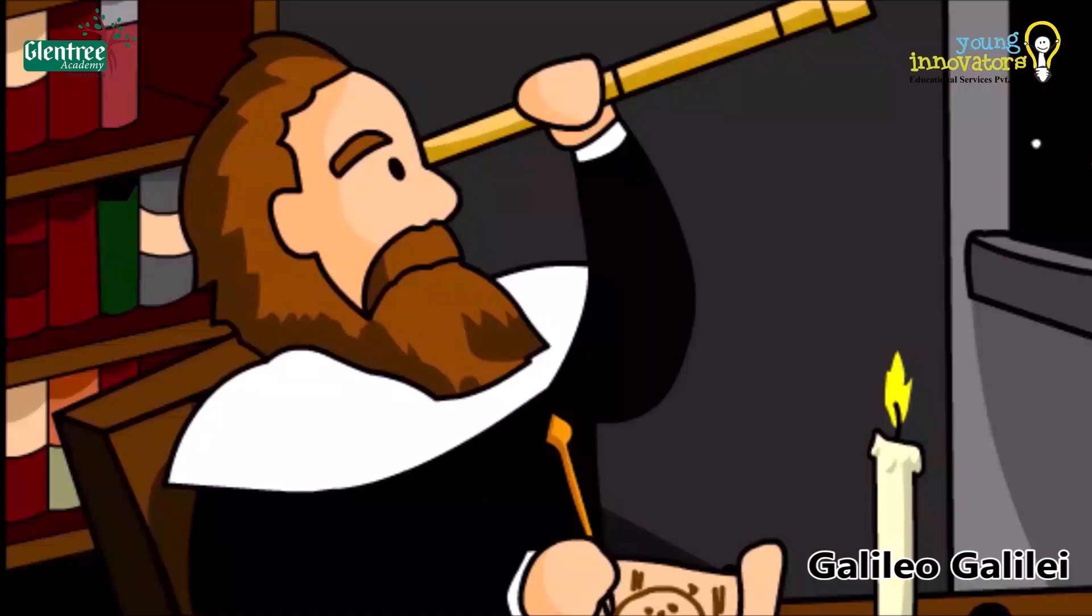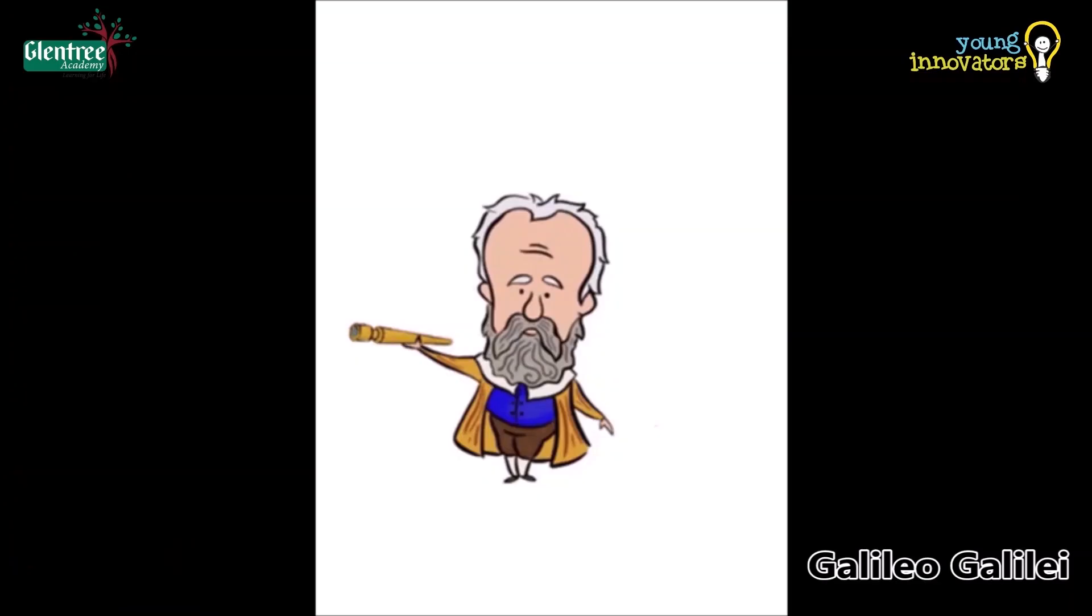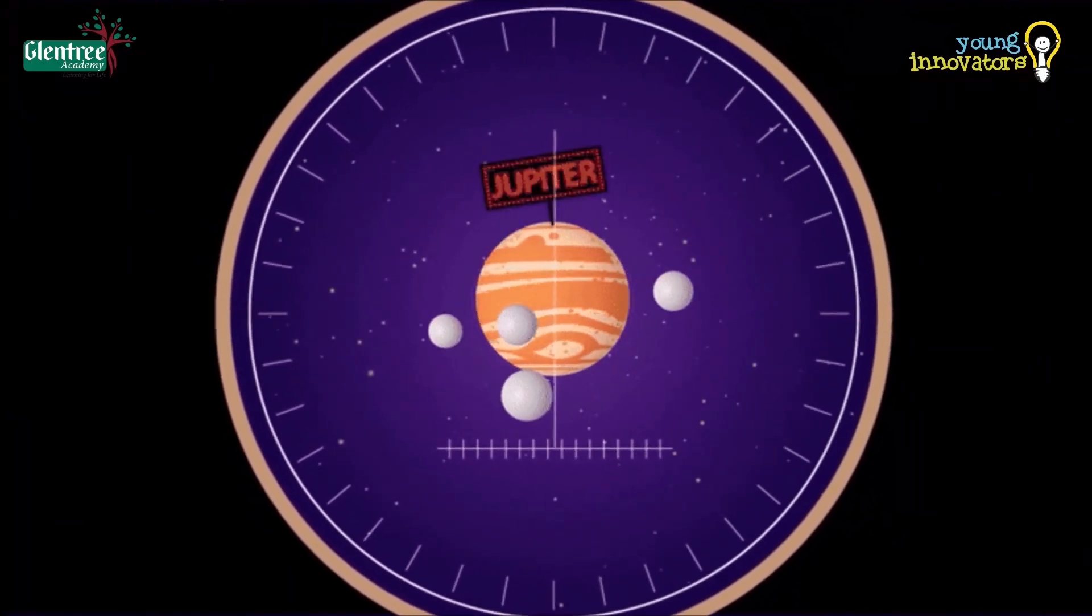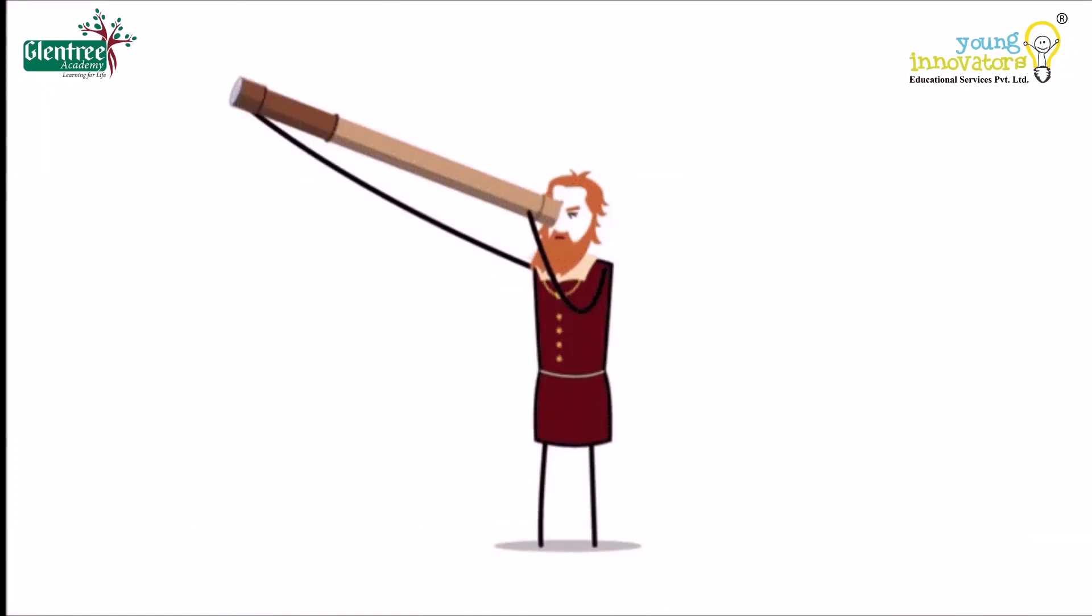It was in 16th century with the help of telescope, Galileo Galilei looked at the bright object Jupiter in the sky and observed that it had many moons going around it.